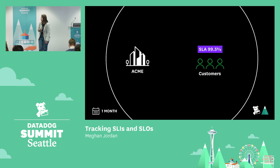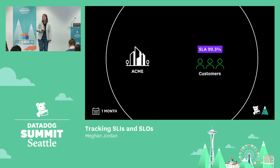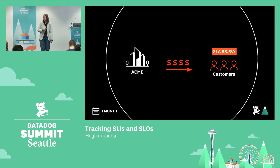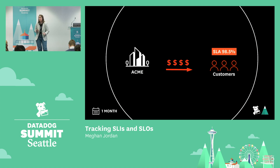To put these into perspective, let's take a look at Acme Corp. Acme Corp's customers rely on their APIs to run their own businesses. So Acme needs to maintain a monthly SLA of 99.5%. If they breach that SLA, they're on the hook financially — they'll probably owe some percentage of service credit back to those customers, and this is something they definitely want to avoid.